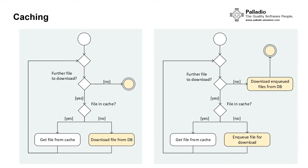We have designed two different alternatives for the caching. In the usage scenario where a user wants to download multiple files, the first alternative checks for each file whether it is in the cache; if not, the file is downloaded from the database, then the next file is processed.